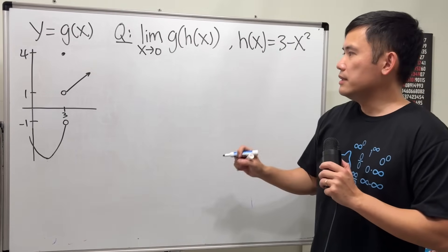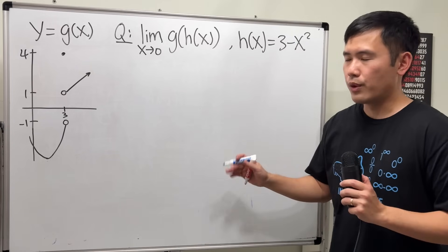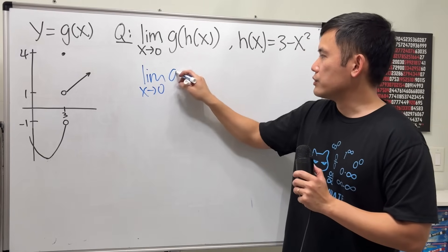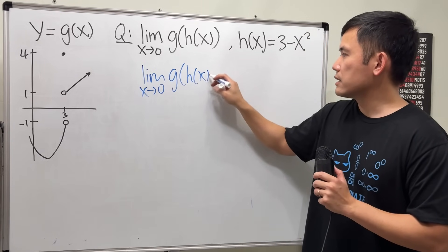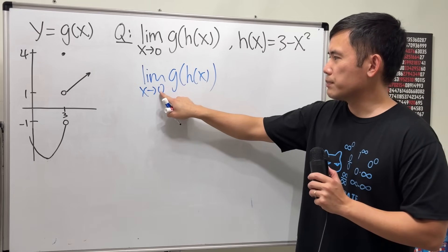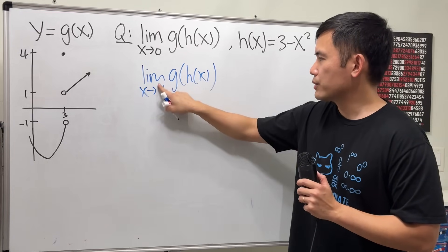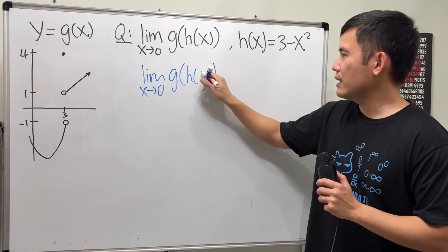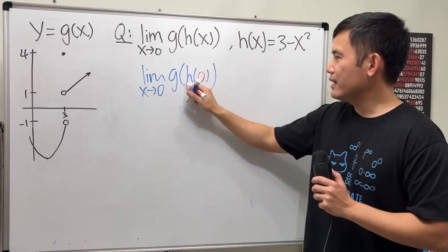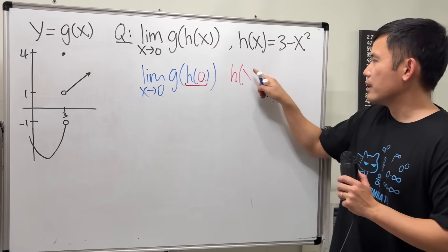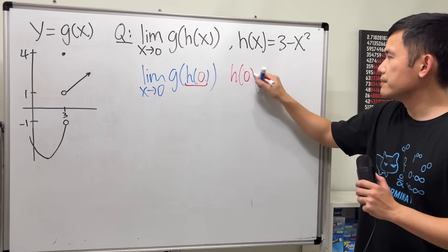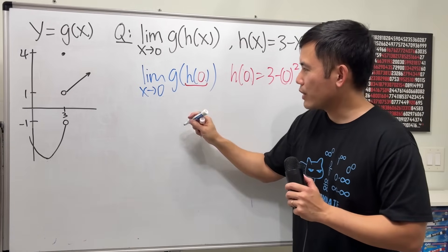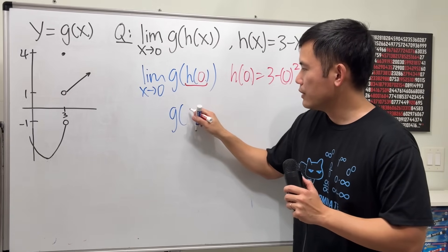So, firstly, this is the trap of this question. If we take the limit as x approaching 0 of g of h of x, it looks like we can just plug in 0, right? So h of 0 — well, h of 0 is just 3 minus 0 squared, which is 3. So it looks like we're trying to get g of 3.